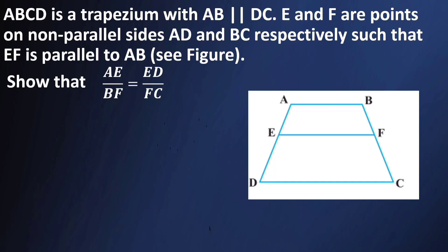ABCD is a trapezium with AB parallel to CD. E and F are the points on non-parallel sides AD and BC respectively, such that EF is parallel to AB. Show that AE/BF is equal to ED/FC.